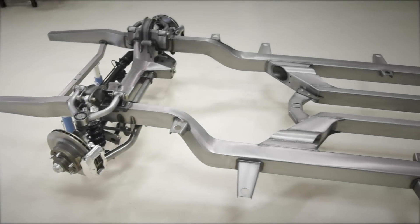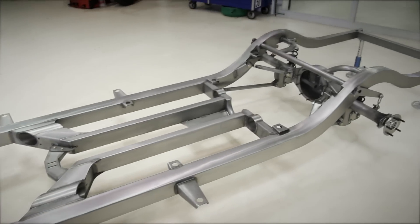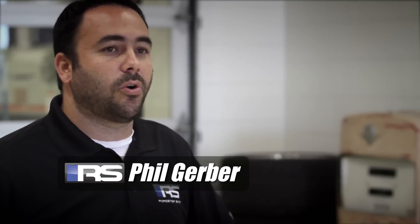The Revo Tri-5 chassis is really designed for the customer who is looking for a great riding, great handling car that isn't necessarily going to do a lot of track stuff, but still wants a car that's going to perform and handle like a new Corvette would.